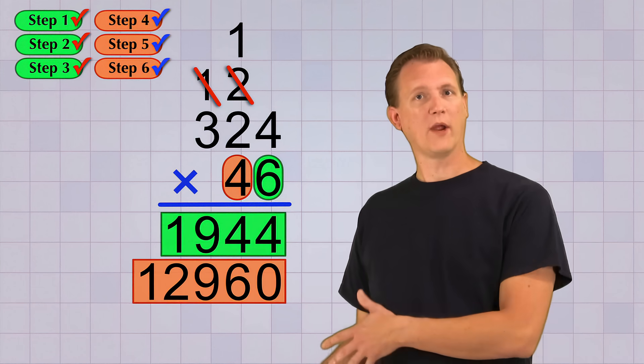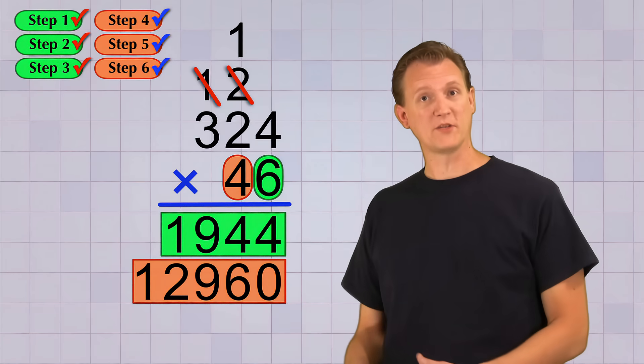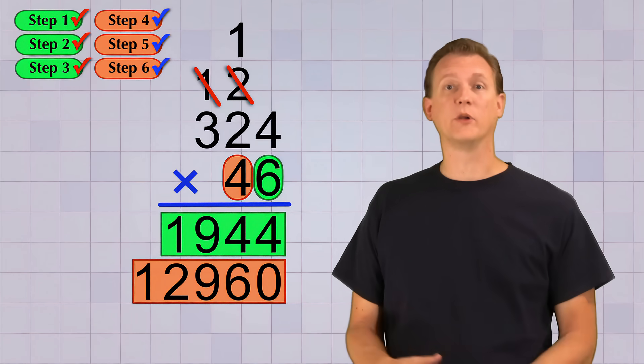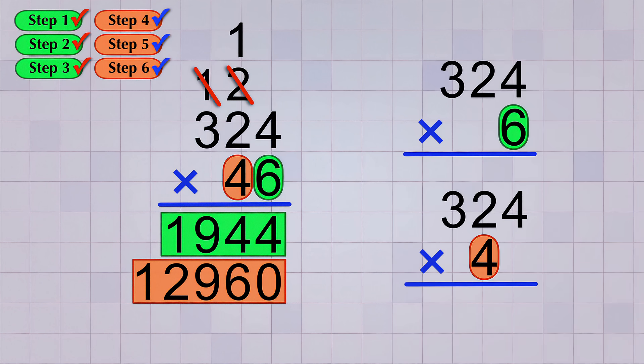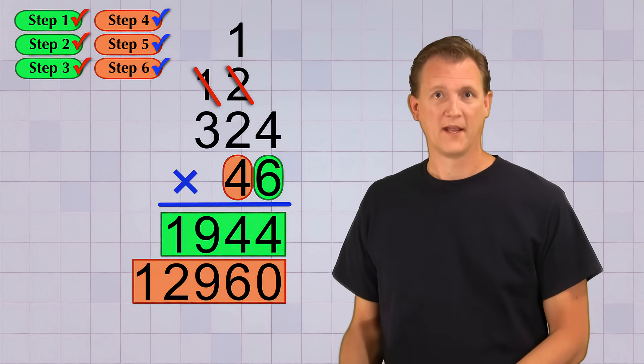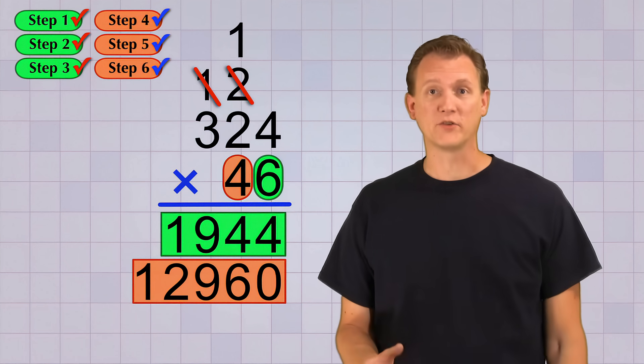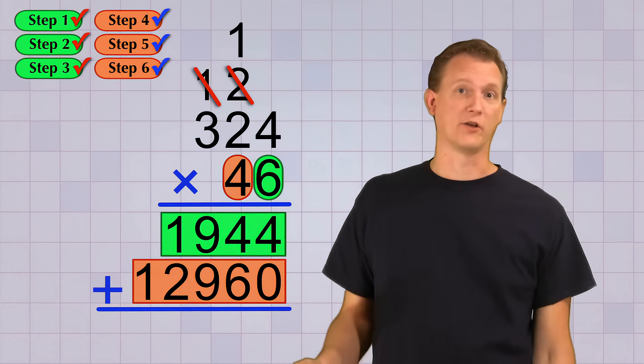But now what do we do? We have two answer lines, but this is just one multiplication problem. Well remember, the reason we have two answer lines is that we're pretending that we're doing two separate multiplication problems. We treated it like it was 6 times 324, and 4 times 324. But since the 4 was in the tens place, we had to put an extra 0 in our second answer, since it would really be the answer from 40 times 324. Now as I mentioned earlier, all we have to do to get the final answer is add those two answers together. And the great news is that those answers are already stacked up like an addition problem should be, so we can just draw a line below them and stick a plus sign on the left side.